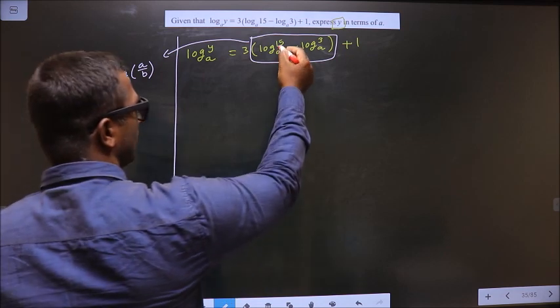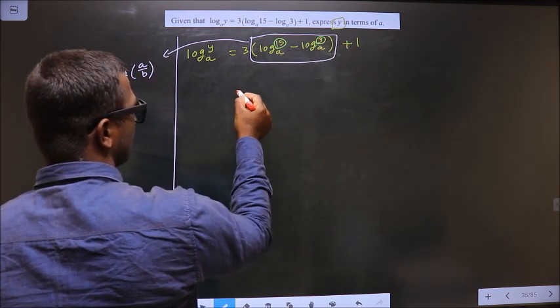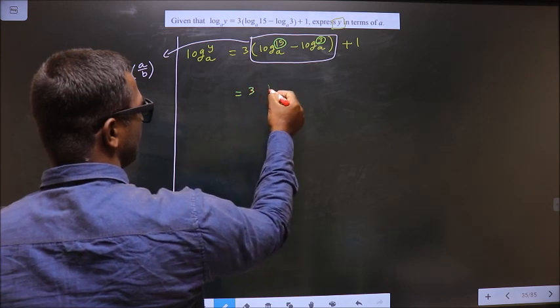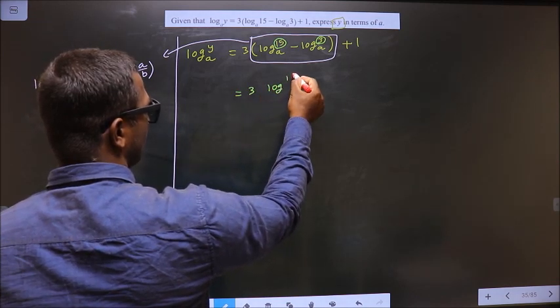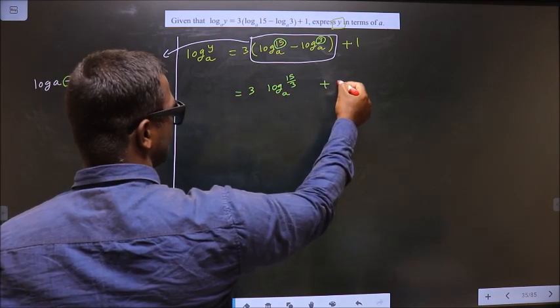So here in place of a it is 15, in place of b it is 3. So this will result in 3 times log 15 by 3 base a plus 1.